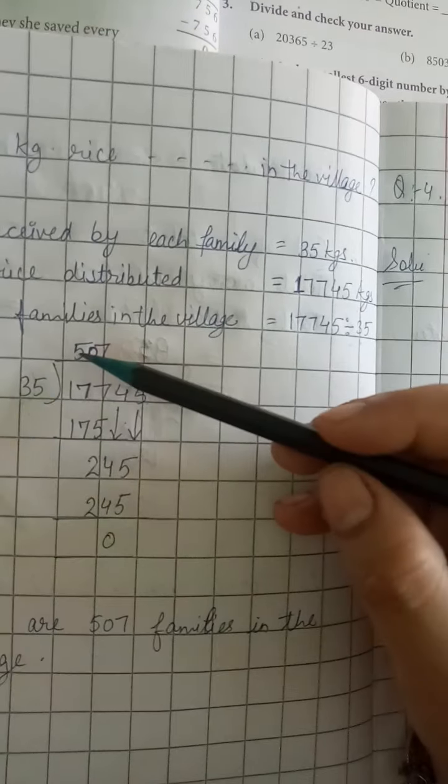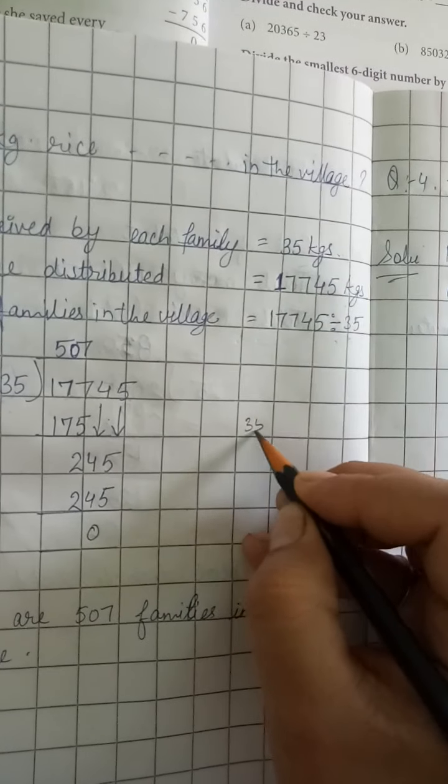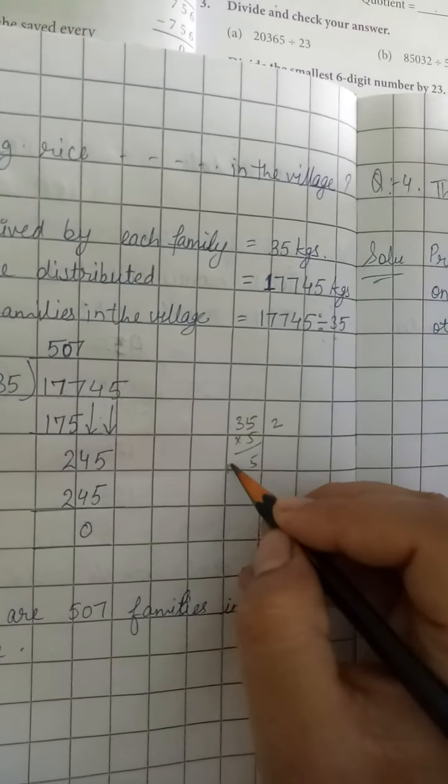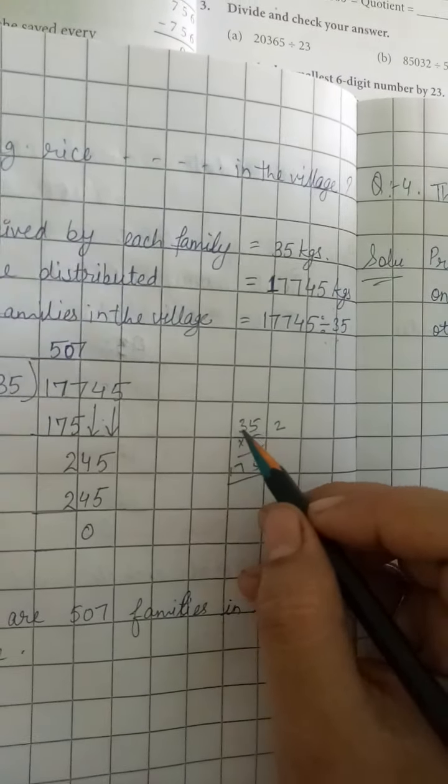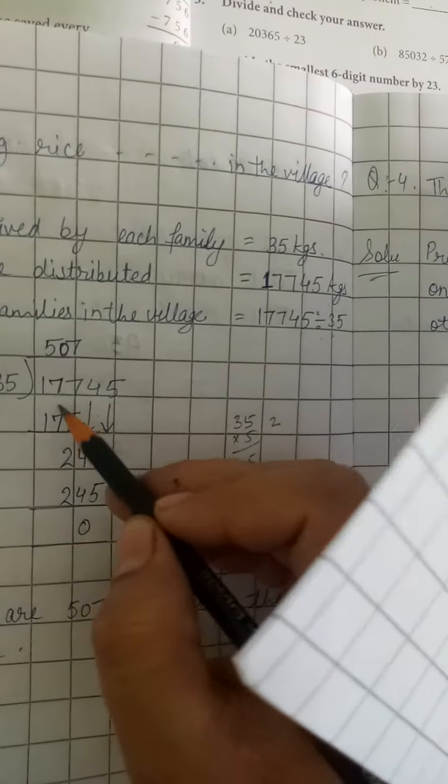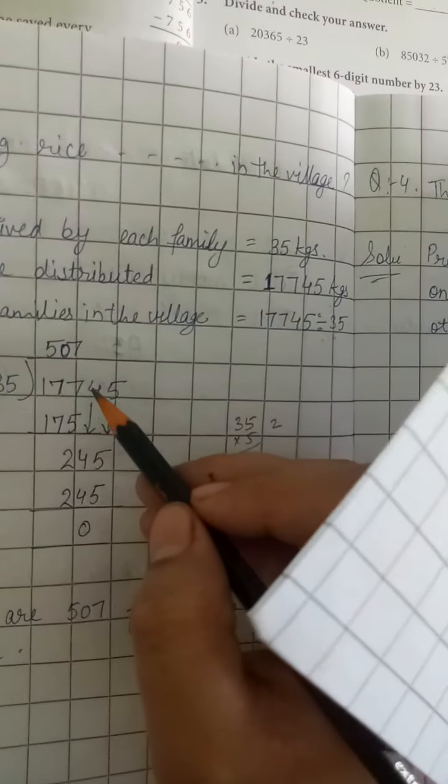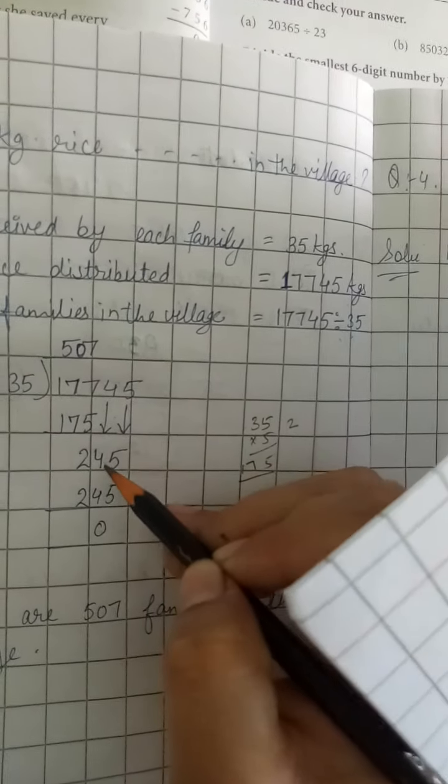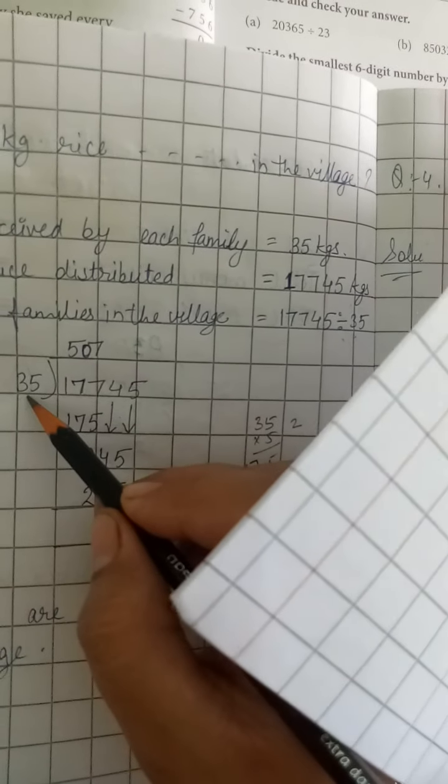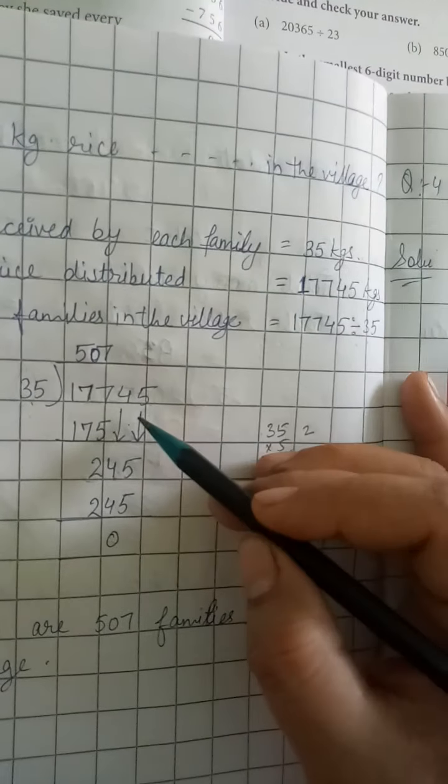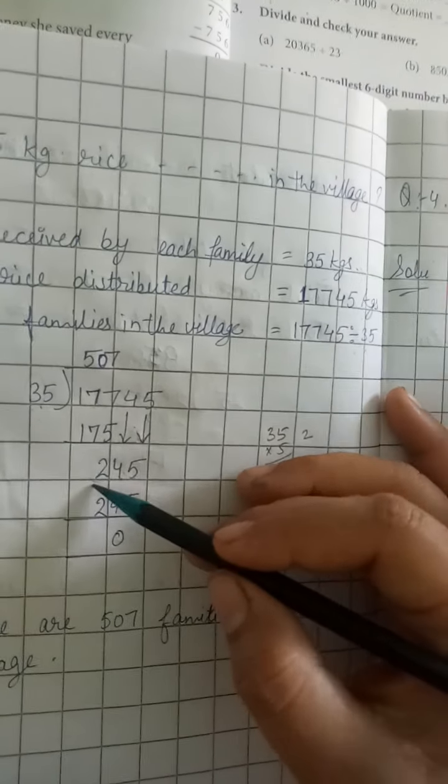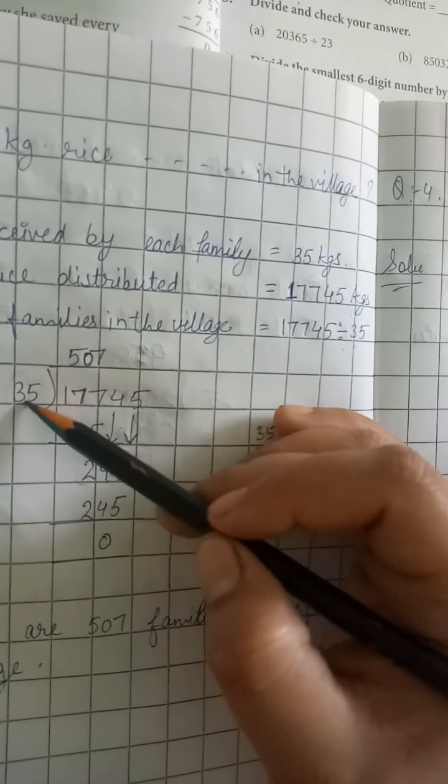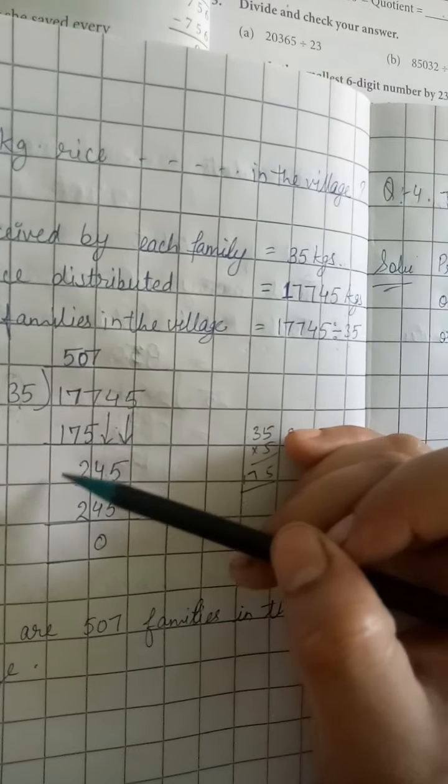35 × 5 is 175, which is less than 177. 5 × 5 is 25, plus 15 is 16, 17. Now let's subtract, we get 2. We will bring down 4, but still the number is less than 35, so we need to bring down one more number.